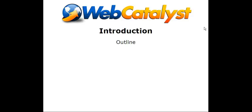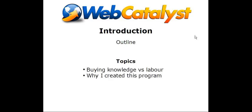Right then, let's start over here with this introduction and give you an outline of the program. The topics we're going to cover in this particular section are the idea of buying knowledge versus buying labour. The reason why we're going to save so much money here is because we've got the knowledge and we're going to have to pay for the agency's labour. I'm going to tell you why I created this program in the first place, and then what you can do with it depending on who you are — business owner, marketing consultant, graphic designer — it can be used by all those different people in different ways.